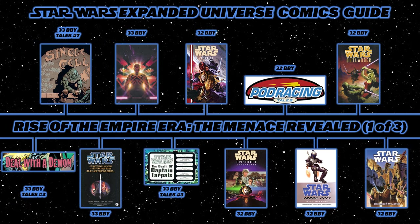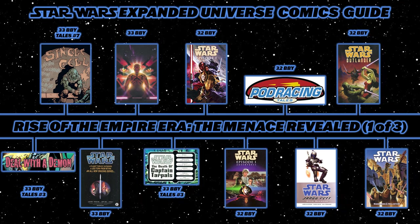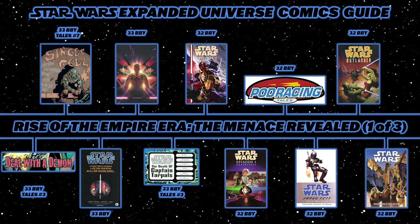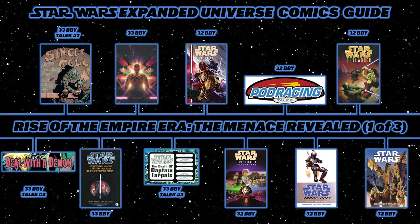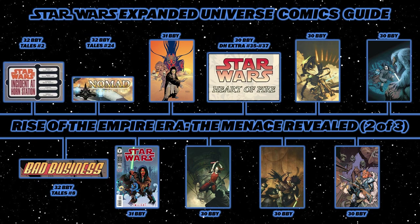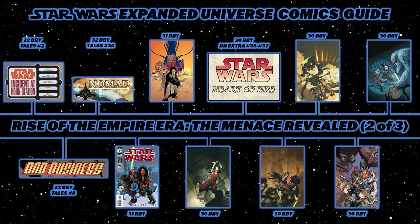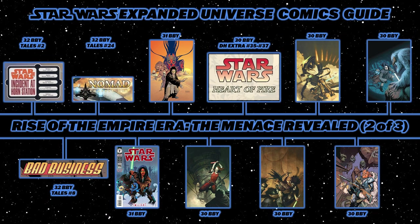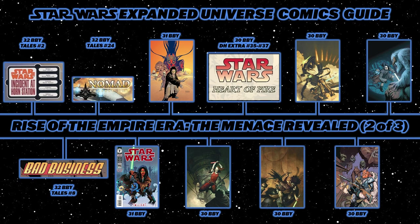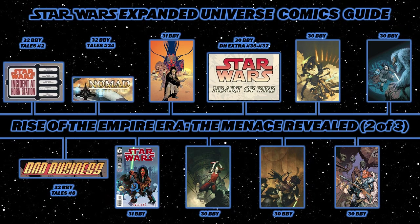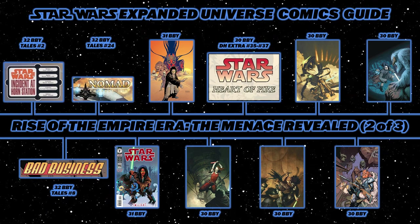The next Republic arc is Emissaries to Malastare, seeing half of the Jedi Council travel to Malastare to negotiate peace between warring factions. Then back to Star Wars Tales: Incident at Horn Station from Tales number 2, Bad Business from Tales number 8, and Nomad, collected from Star Wars Tales numbers 21 through 24. Then back to Republic — issues 19 through 22 — for the story Twilight, following Quinlan Vos, who has lost his memory.